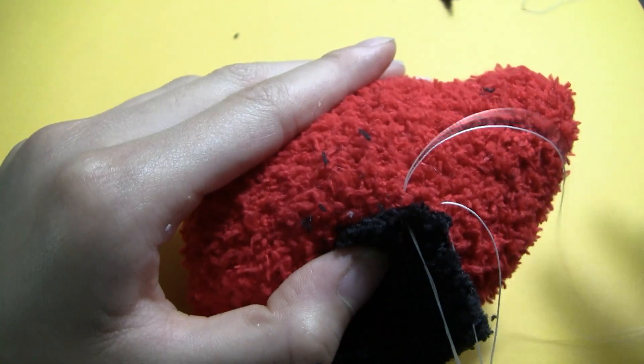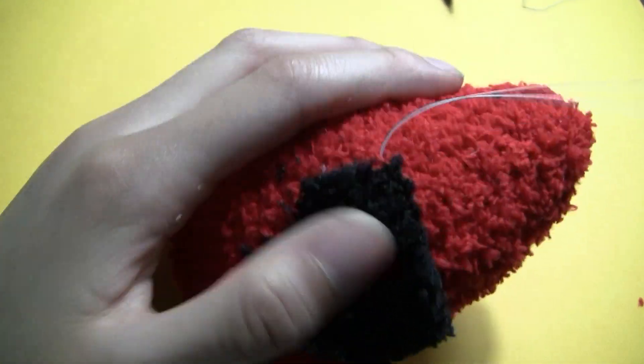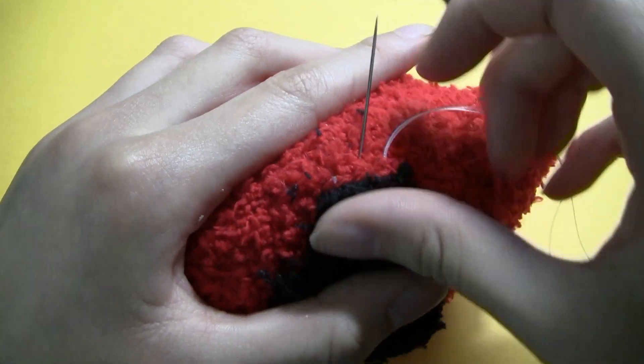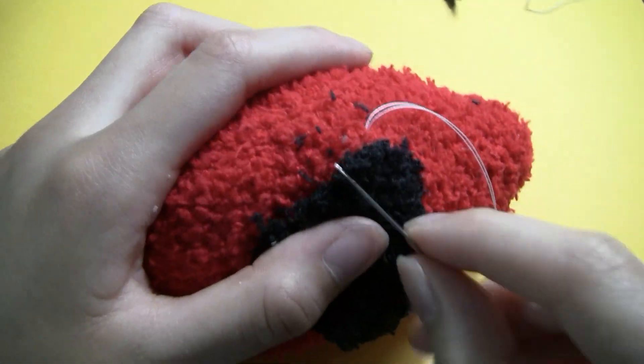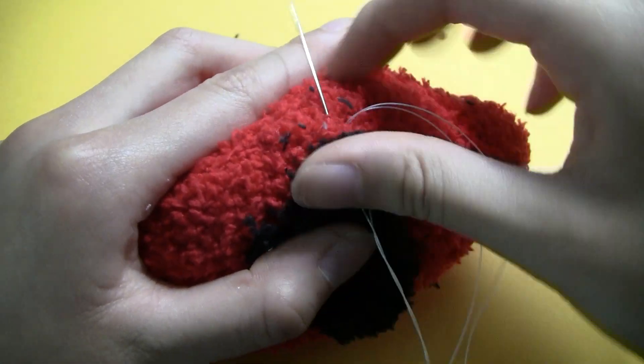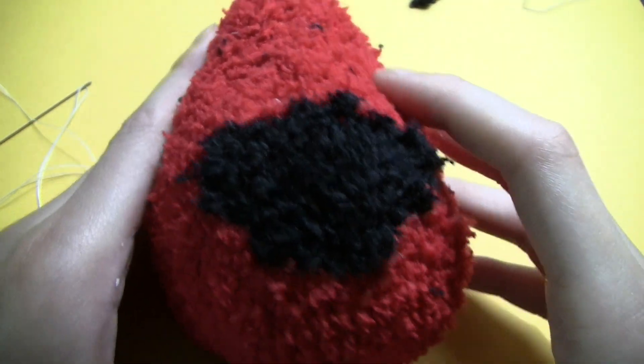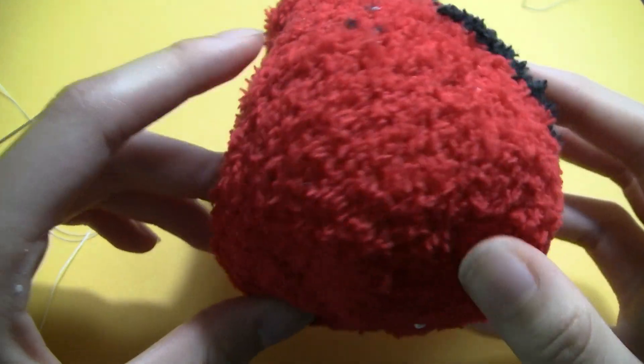Then I just whip stitched it onto the face like so. Now your plush should look something like Shy Guy from Mario.